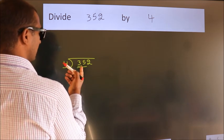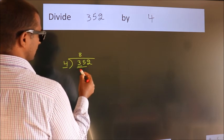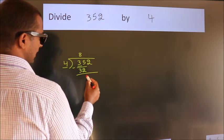A number close to 35 in the 4 table is 4, 8, 32. Now we should subtract. We get 3.